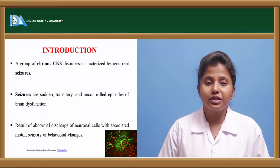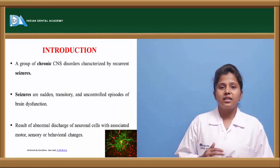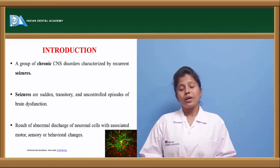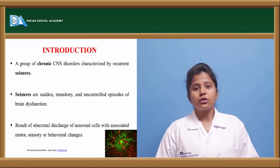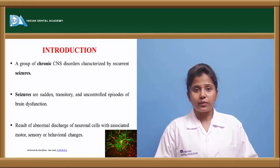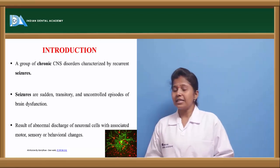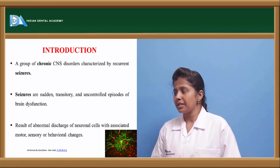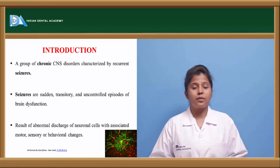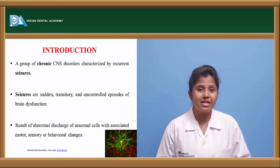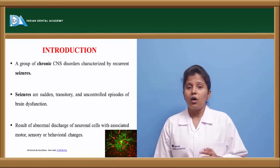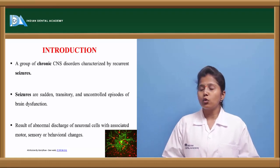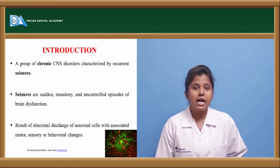Seizures are sudden or transitory, uncontrolled episodes of brain dysfunction. This brain dysfunction occurs because neurons are the basic units of the brain. If there is any abnormal discharge of the neuronal cells along with motor, behavioral, and sensory changes, it leads to repetitive episodes of brain dysfunction — that condition is called seizures. A group of chronic CNS disorders associated with seizures is called epilepsy.